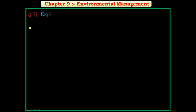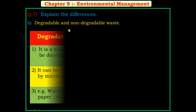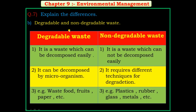Second question of question number 7: explain the differences between degradable and non-degradable waste. Make two columns — first column for degradable waste, second column for non-degradable waste. First point in degradable waste: it is a waste which can be decomposed easily. First point in non-degradable waste: it is a waste which cannot be decomposed easily. Second point in non-degradable waste: it requires different techniques for degradation.